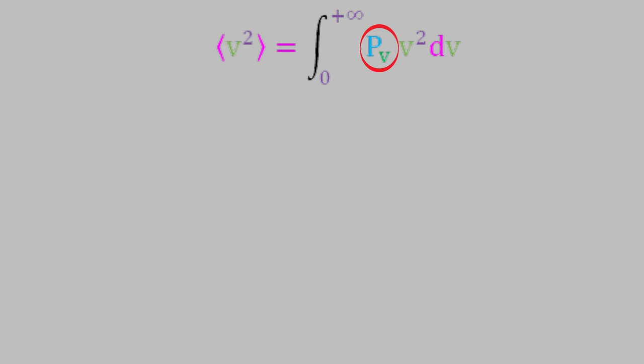Next, let's look at this probability. The probability here is the probability that our molecule has the velocity v. We already got an expression for that probability, which is this. If we plug that into our equation for the average v squared, here's what we get.